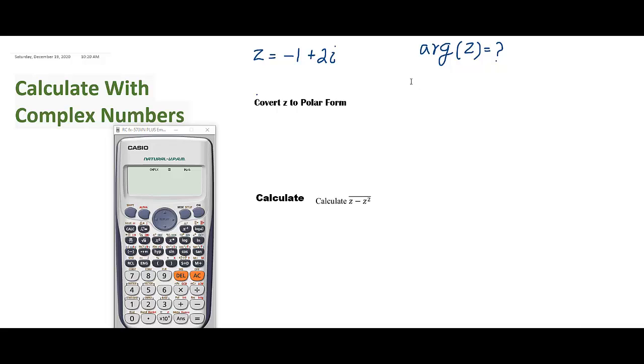To find the argument of a complex number, your angle of the calculator should be set on the radian mode. So let's come back to the setting again. Shift, press mode, and then at number 4, it is radian, so press 4. Now your angle is set on the radian mode.